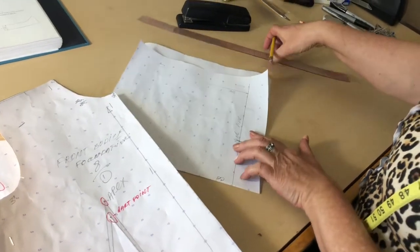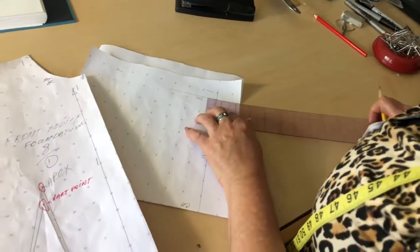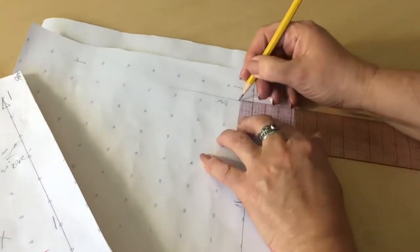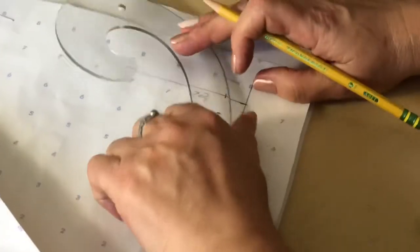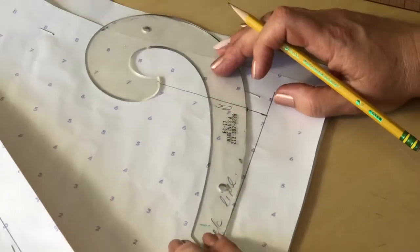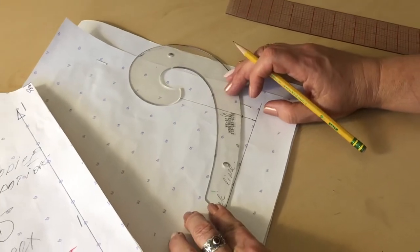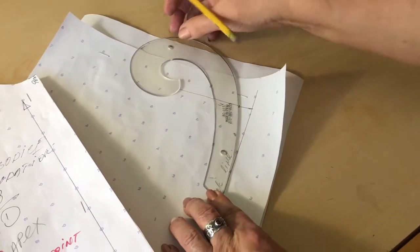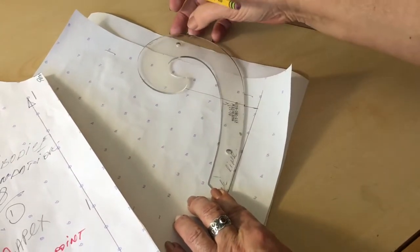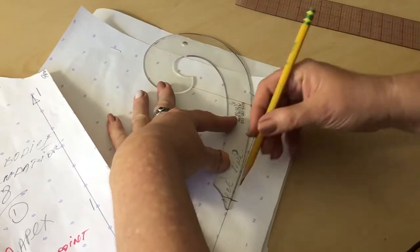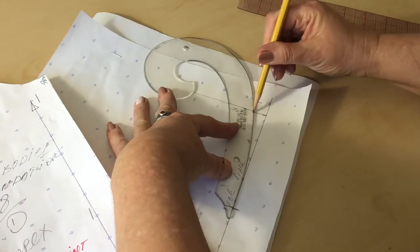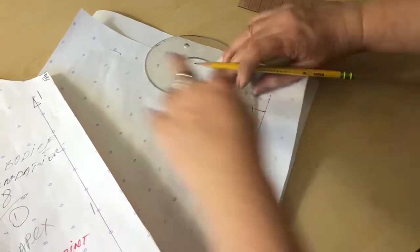On this line I am going to measure half an inch up and with my French curve by placing like this the tail of the French curve should go towards the shoulder and I am going to draft a curvy line. This is a shallow curve like this.